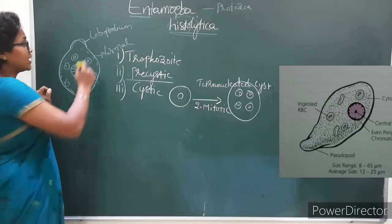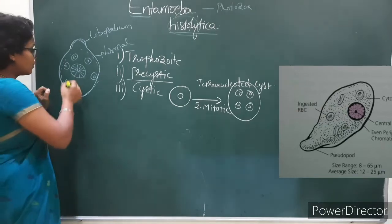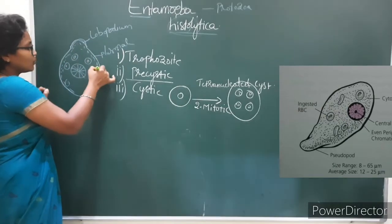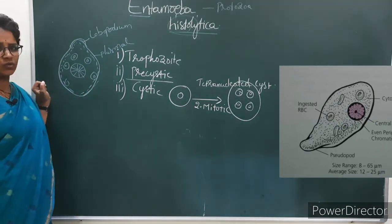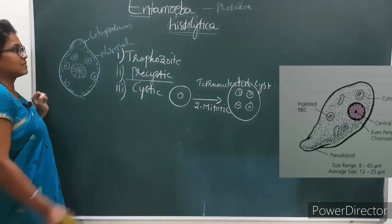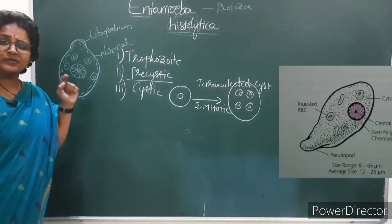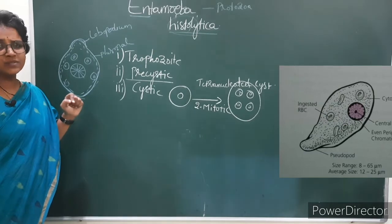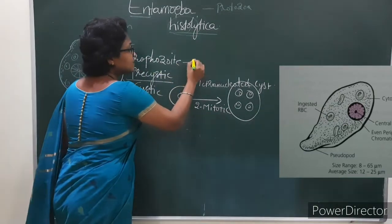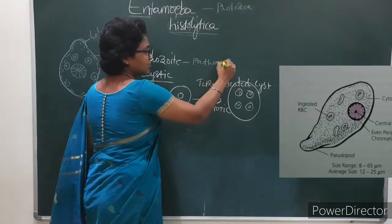It is called lobopodium because it has a blunt finger-like structure. The cytoplasm is differentiated into ectoplasm and endoplasm, and it is covered with the plasma lemma. It is an intestinal parasite that lives in the mucosa and submucosa layers of the human being. This stage is the pathogenic stage.